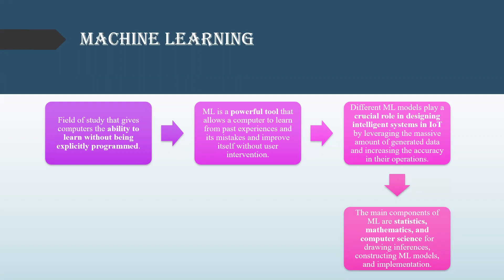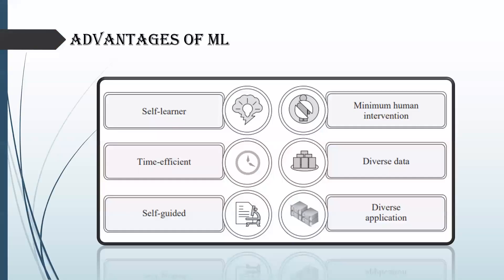We can see some advantages of machine learning: self-learner, time-efficient, self-guided, minimum human intervention, diverse data, and diverse application. Self-learner means it is capable of learning from prior experiences and real-time scenarios. Because of that, it improves performance. The system can offer better accuracy when analyzing weather data from four months back and in real time.